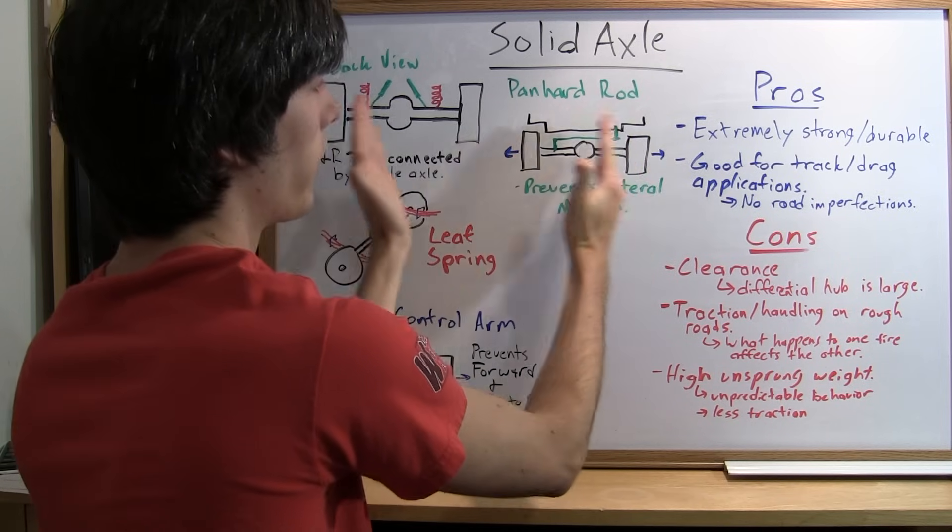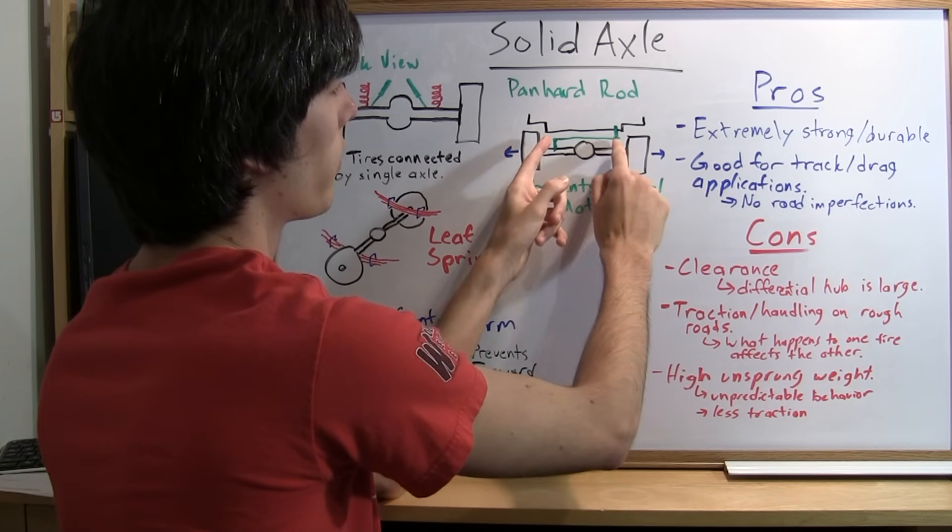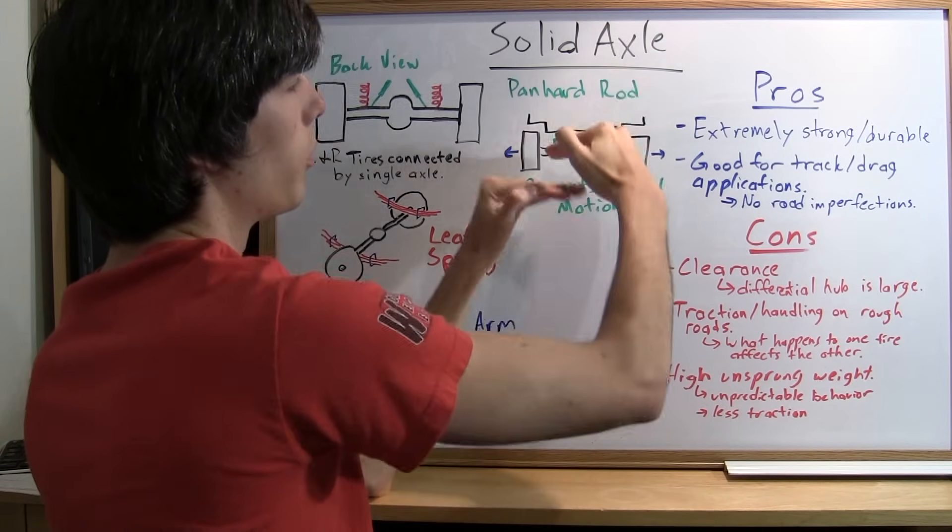Basically, this prevents it from moving left or right. But what it does not prevent—these are joints—so it can still move up and down.